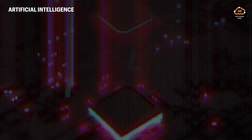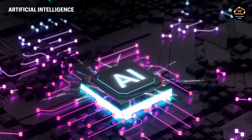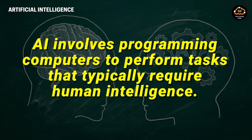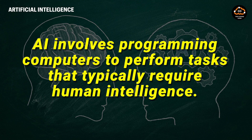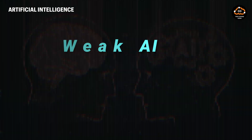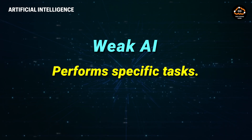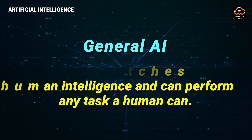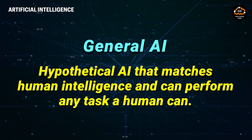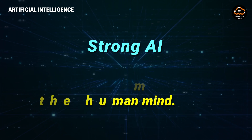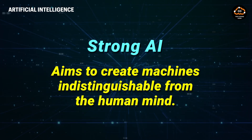Artificial intelligence — while the concept of AI has been around for centuries, its potential wasn't truly explored until the 1950s, thanks to British polymath Alan Turing. AI involves programming computers to perform tasks that typically require human intelligence. There are different types of AI: weak AI, which performs specific tasks like Apple Siri or Google Assistant; general AI, a hypothetical AI that matches human intelligence and can perform any task a human can; and strong AI, also hypothetical, which aims to create machines indistinguishable from the human mind.